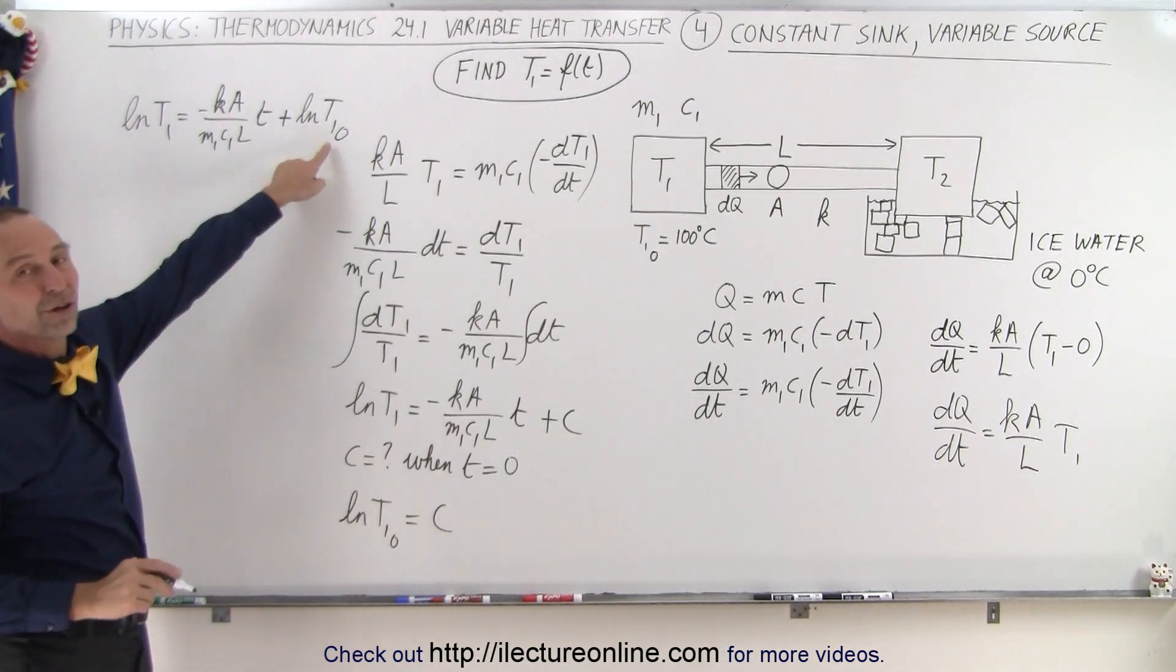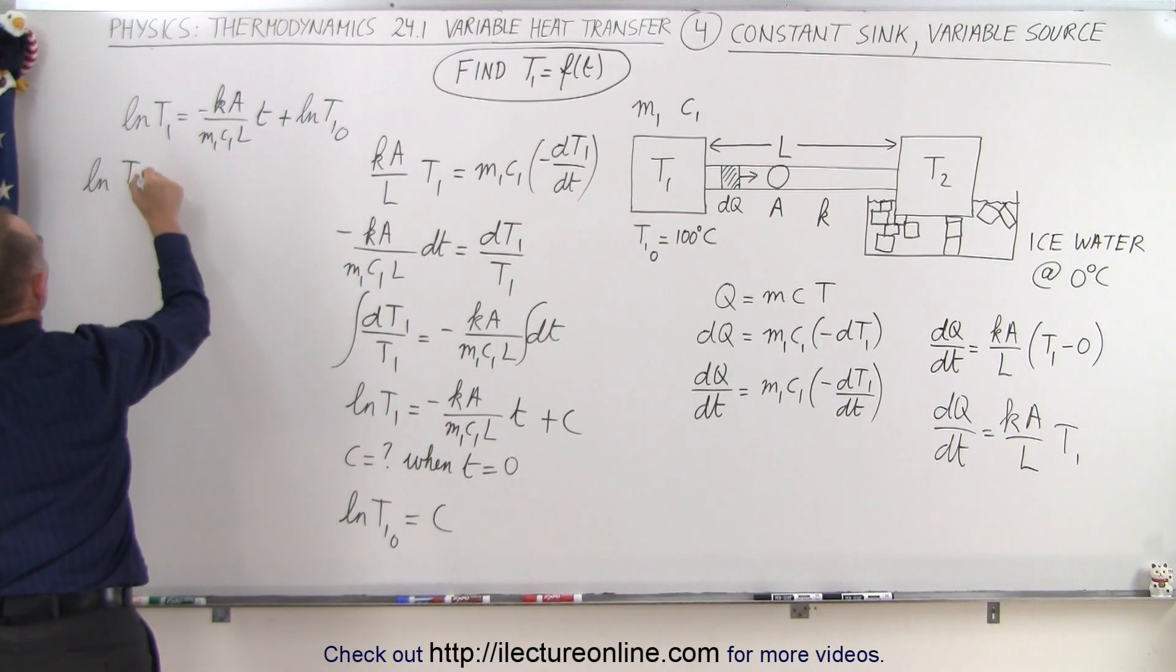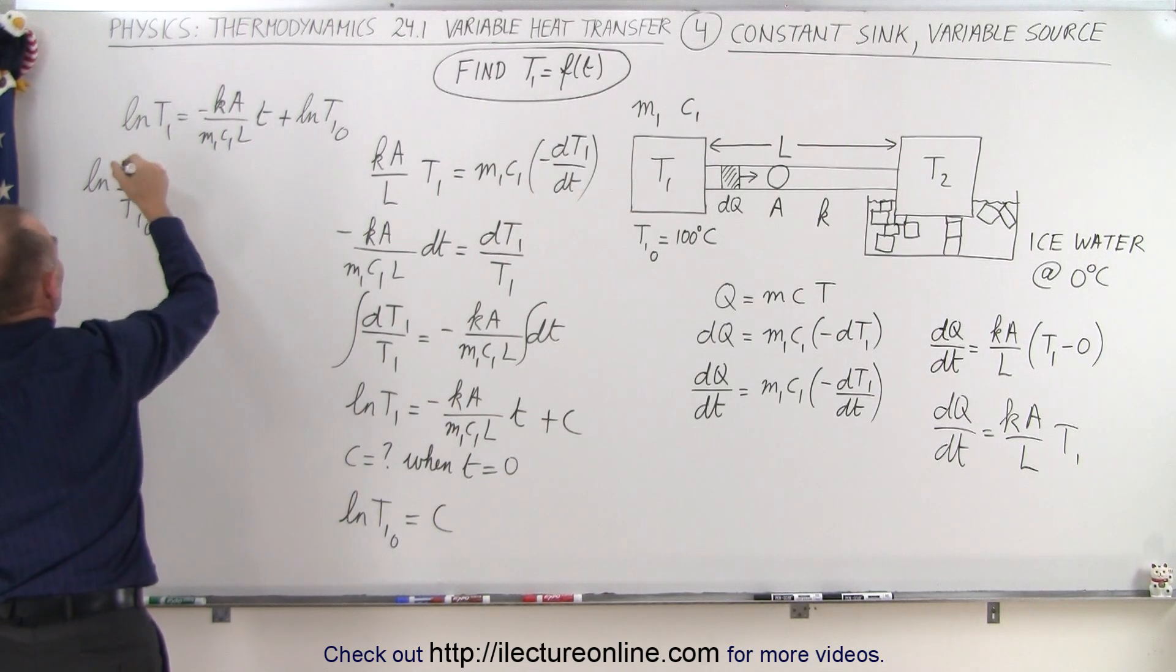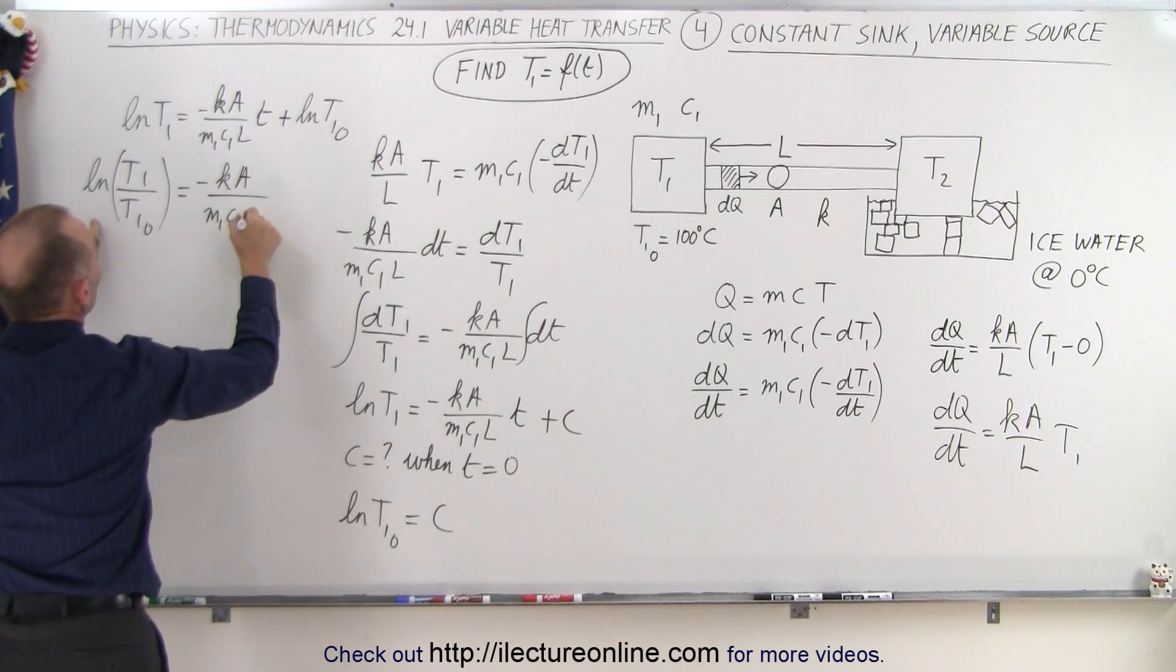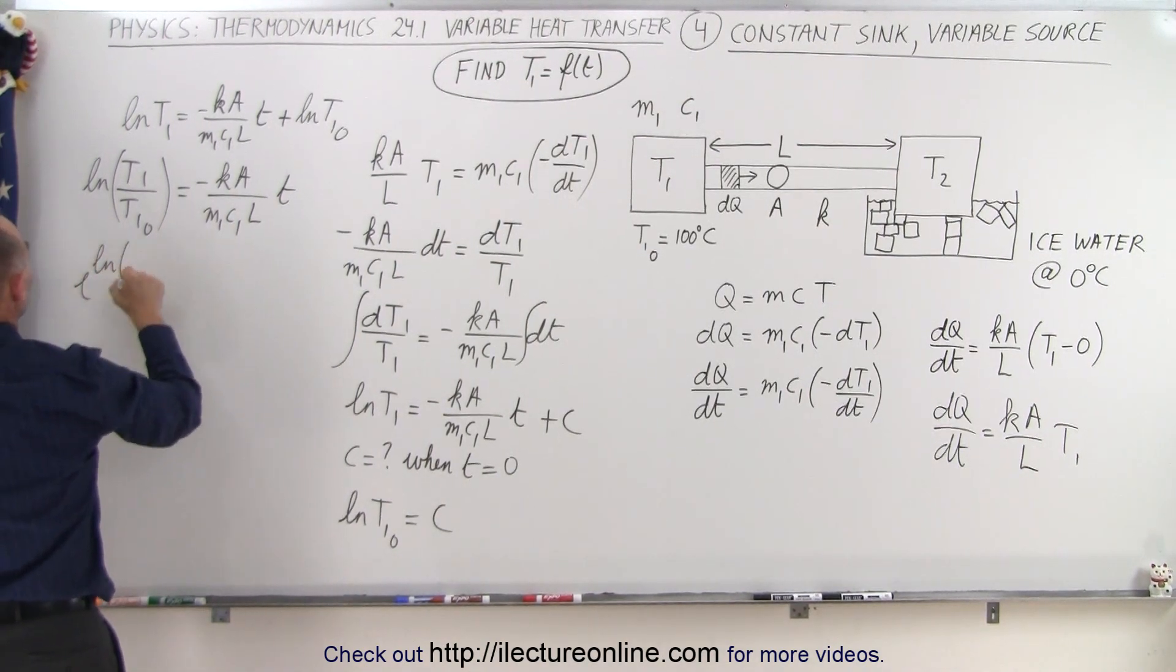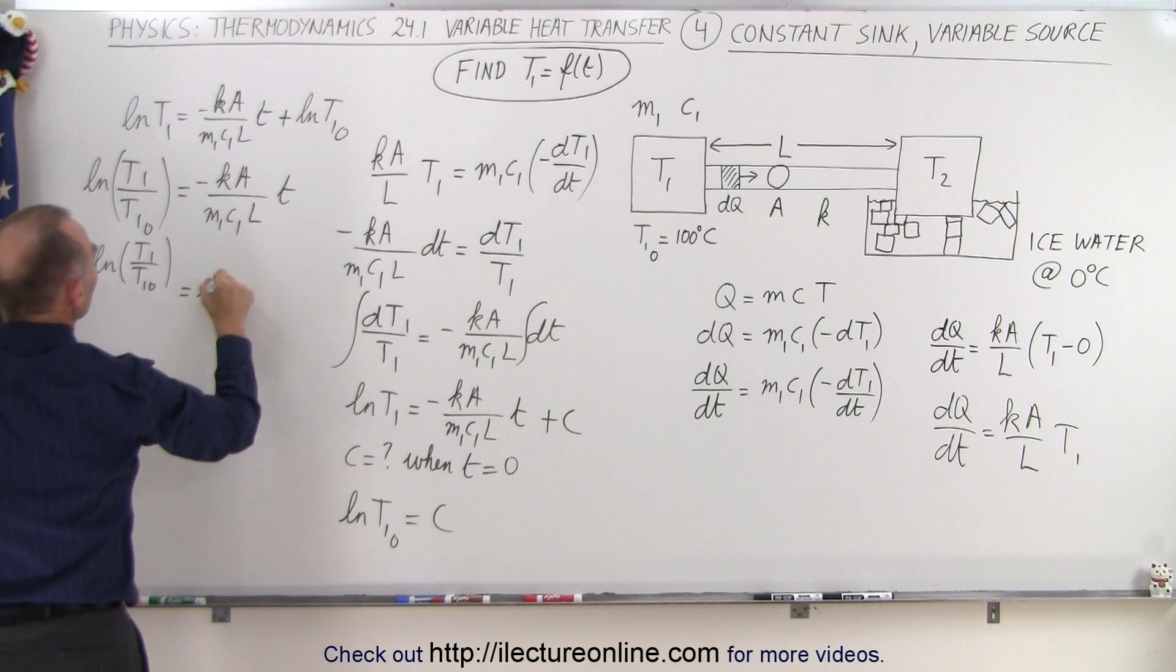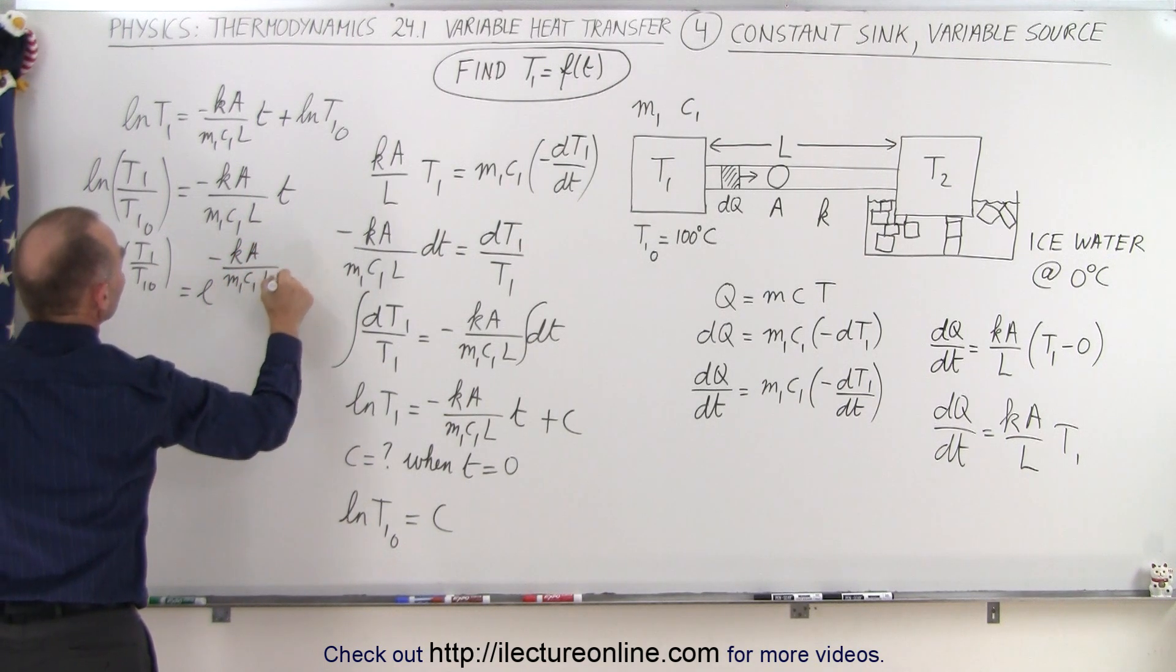So that's the initial temperature of t1. Moving all that over to one side, I can say that the natural log of t1 divided by t1 initial, because when I subtract, subtract the natural log the same as taking the quotient of that. That's going to be equal to minus Ka divided by M1C1 times L times t. And now I can raise each side of the equation to the exponent e, so e to the natural log of t1 over t1 initial is equal to e to the minus Ka over M1C1 L times t.